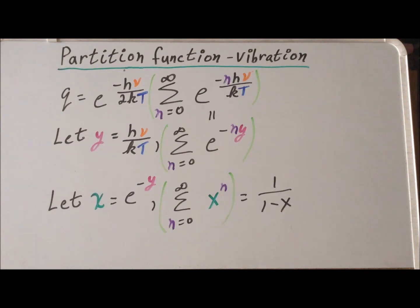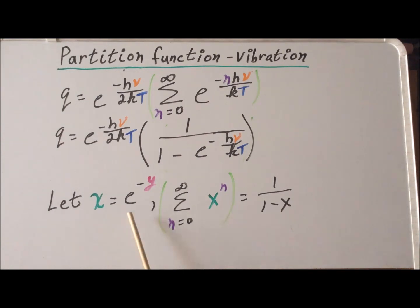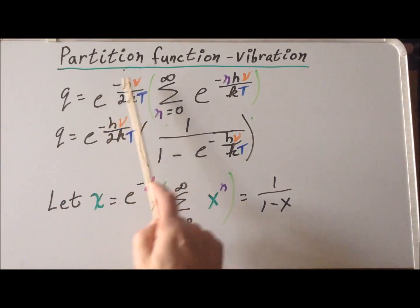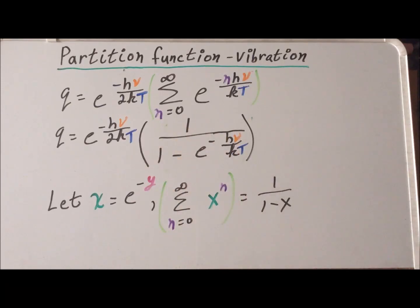Now, if we go and back substitute into this 1 over 1 minus x, we get a closed expression for the summation of e to the minus n h nu over kT. So now using the fact that x is equal to e to the minus y and that y was equal to h nu over kT, we can replace this summation by the closed value of 1 over 1 minus x using the fact of what our x and y were, so that we now get that the overall partition function is our leading coefficient. But now the sum has been replaced by a closed expression, 1 over 1 minus e to the minus h nu over kT.